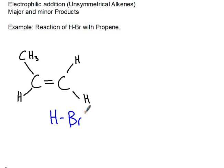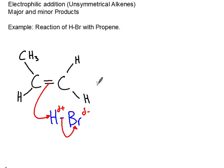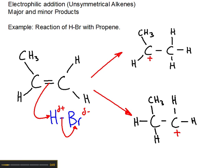If we were to draw the mechanism, that would be a delta negative because we know that the bromine is more electronegative than the hydrogen. The double bond opens and these electrons go to the bromine group. We would form an intermediate — we could form, in this direction, one of two intermediates: either the secondary carbocation or the primary carbocation.